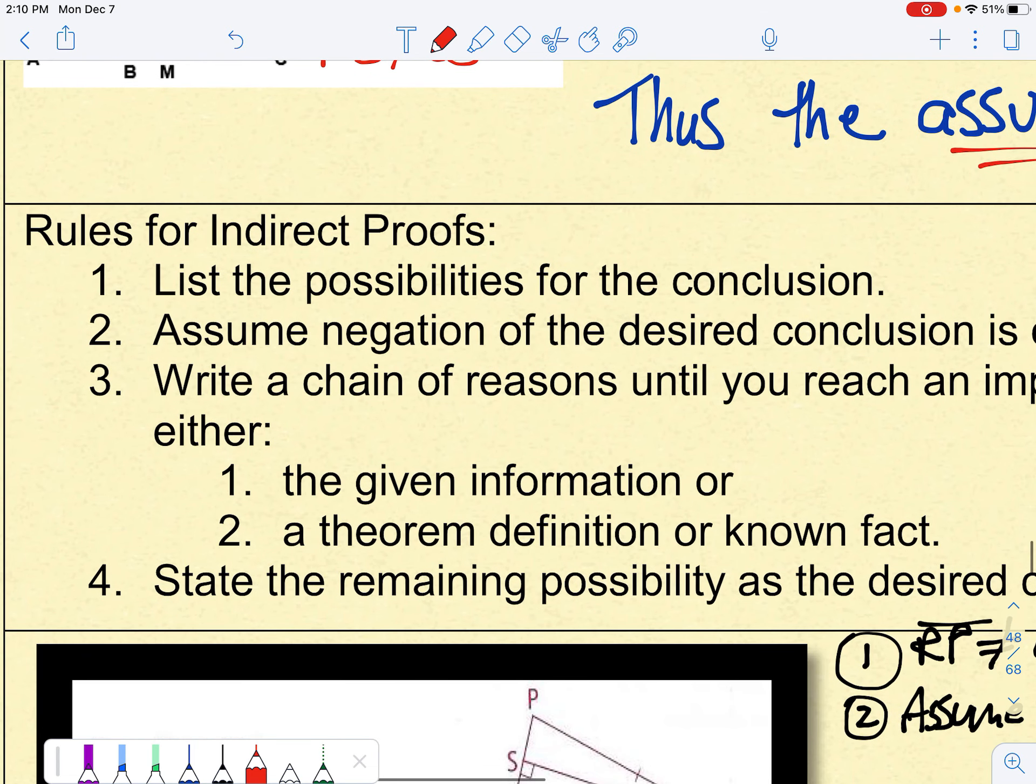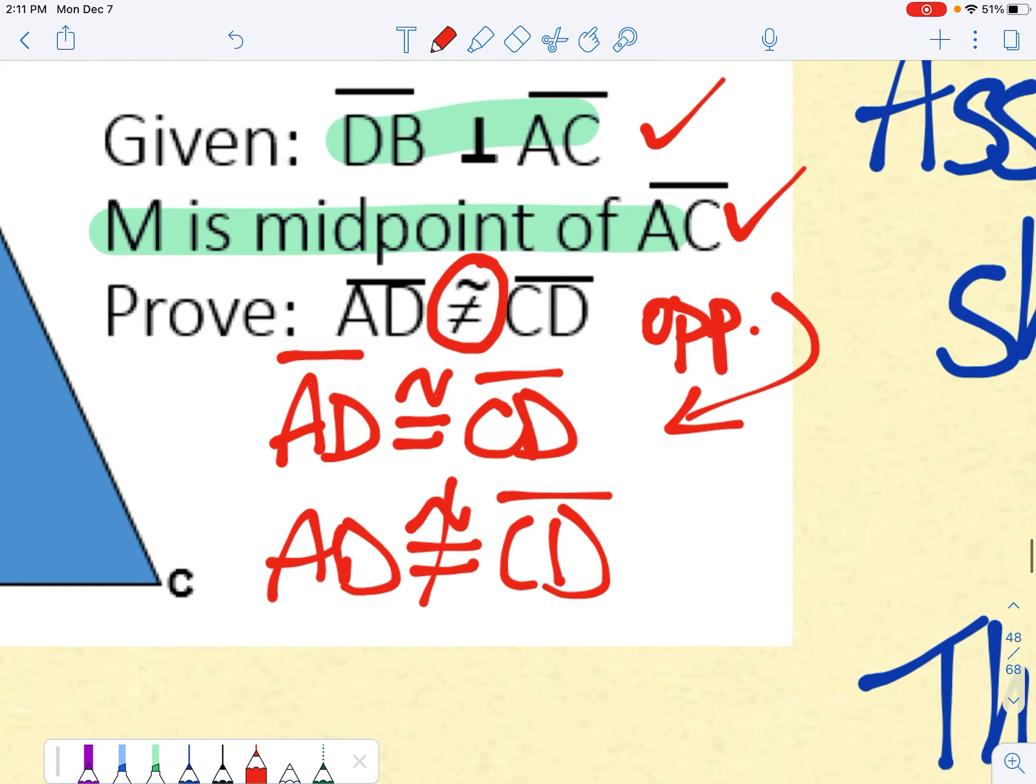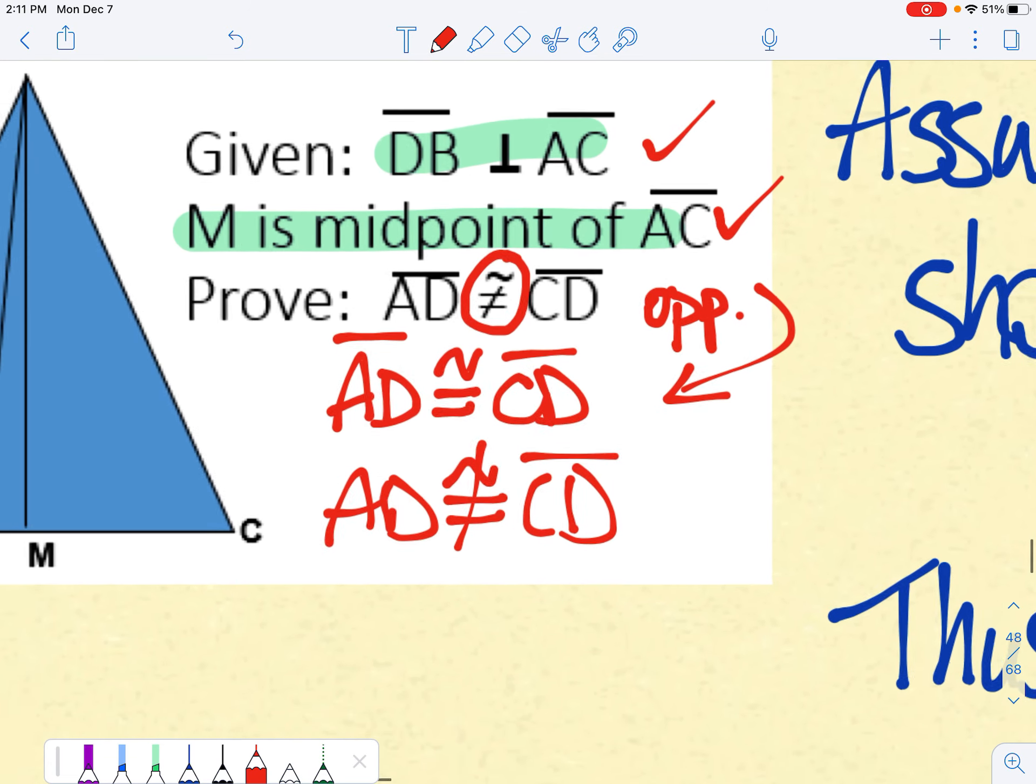And again, here are those rules. The book says list the possibilities for the conclusion. And obviously, there's only two possibilities. Either AD is congruent to CD, or AD is not congruent to CD.